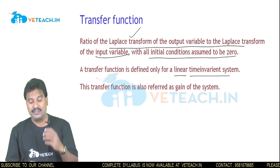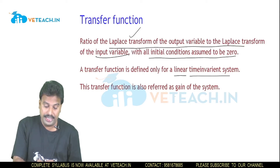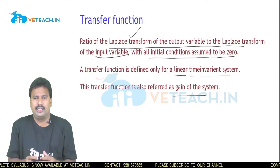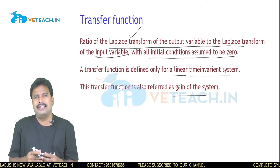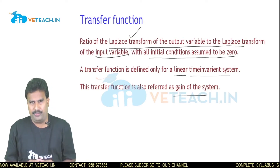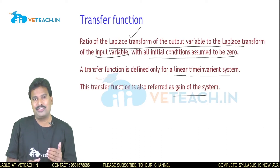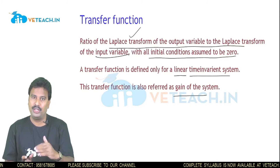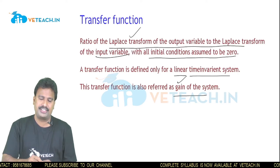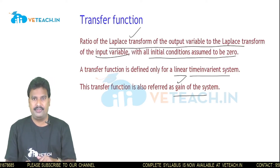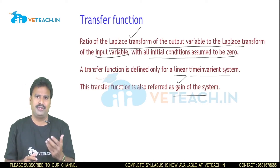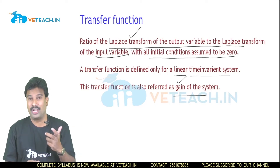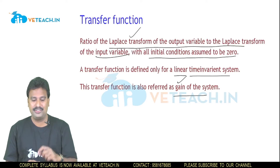The transfer function of a system is also known as the gain of the system. In any electronic circuit, gain is the ratio of output to input. Here, the transfer function is the ratio of the Laplace transform of output to input — both are ratios of output to input. Some textbooks refer to it as gain and some as transfer function; the definition is what is very important.